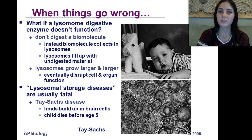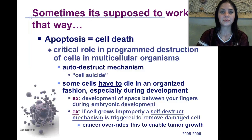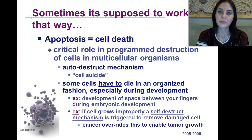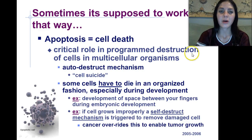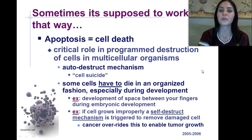There's a lysosomal storage disorder called Tay-Sachs disease. It is fatal — most people with Tay-Sachs die before the age of five. Sometimes, however, lysosomes are supposed to kill cells. Programmed cell death is called apoptosis, and it plays a critical role in the programmed destruction of cells in multicellular organisms.